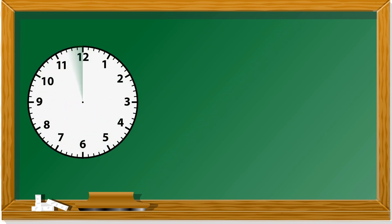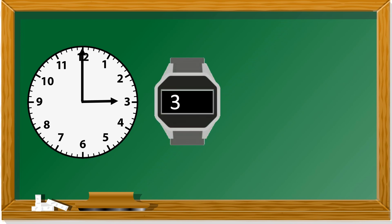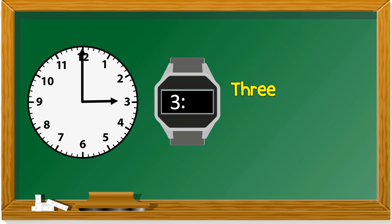Next example. The hour hand is at 3. How about the minute? It's at 12. You cannot multiply by 5 here because this is the starting point, so it's all zero. So you call this 3:00. You don't say 'zero zero' — you write '3' or '3 o'clock.'